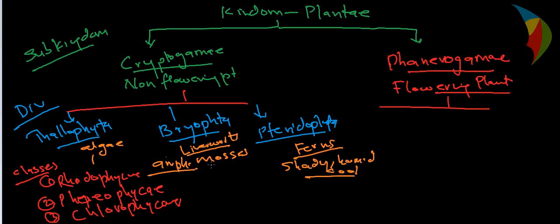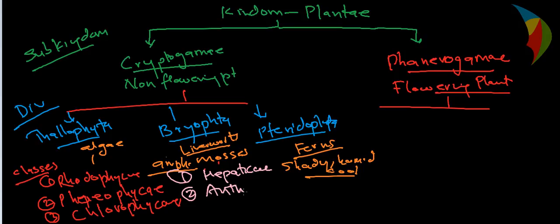In the same way, the Bryophyta division can also be divided into three classes. The first class is Hepaticae, the second class is Anthocerotae, and the third is Musci. So we have divided Bryophyta into three classes: Hepaticae, Anthocerotae, and Musci.